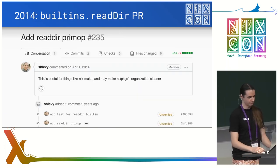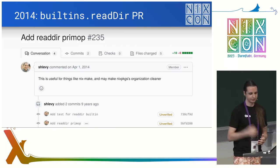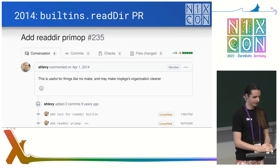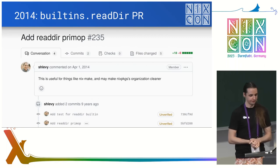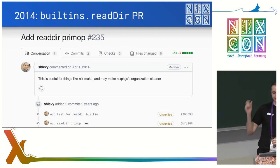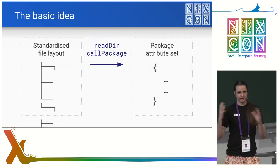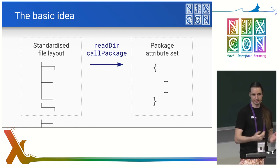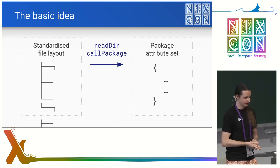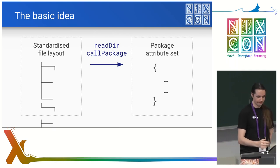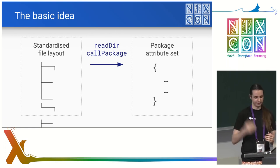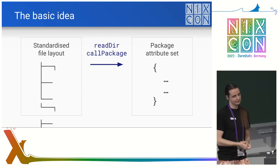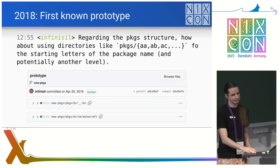The first mention of it was in 2014, when Cher Levy made a PR to add the readDir built-in function to Nix. readDir is a very simple function — it allows you to read a directory from Nix code and process it from there. In the PR description, you'll notice the words "may make Nix packages organization cleaner." Further down it was elaborated: you create a standardized structure in Nixpkgs for all the packages, then use readDir and do some mapping with call-package to turn it into an attribute set. The idea would allow replacing most of all-packages.nix, but this approach is more automatic. Unfortunately, not much happened in the years following that.